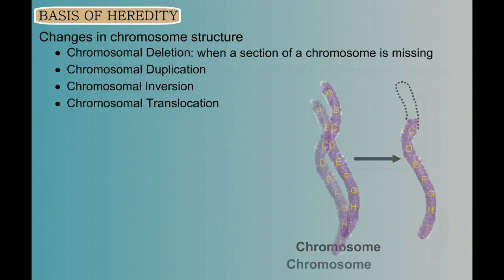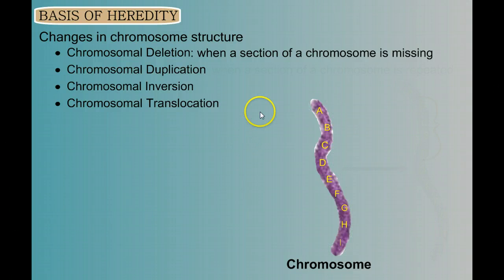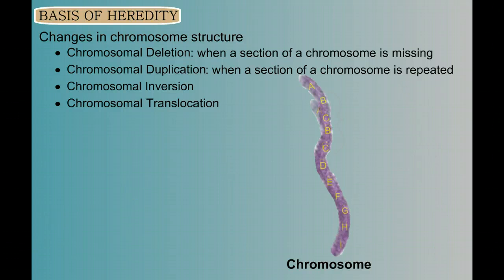Well, let's bring it back to normal and move it down a little bit for our next one. In chromosomal duplication, it's when a section of chromosome is repeated. So maybe this happens. You can see the repeated section here. The B and the C genes are being repeated or duplicated.